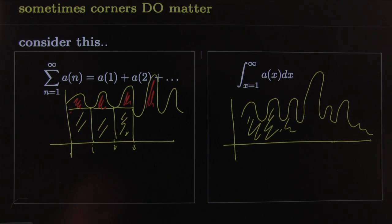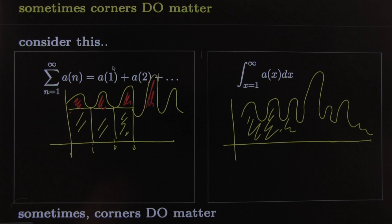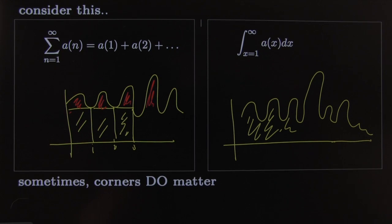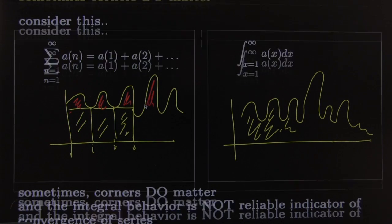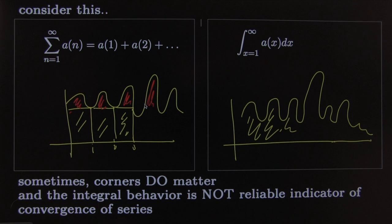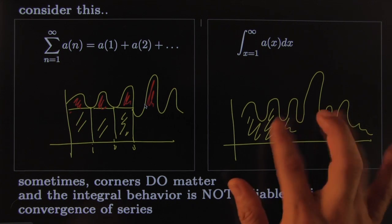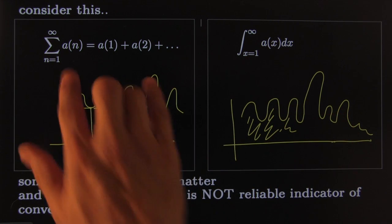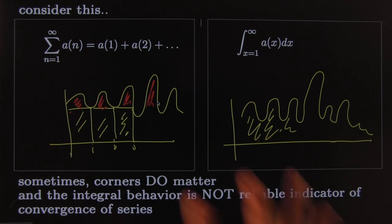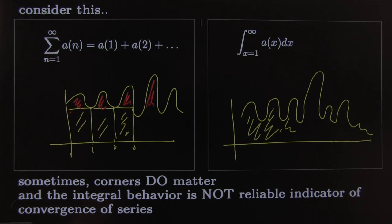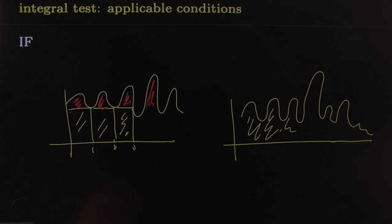So sometimes the corners could matter a lot, and this just gives you some intuition into when that might be. So if the corners do matter, just to summarize, this behavior of the integral is not a good indicator of the behavior of the series. So in that case, all bets are off. We cannot use the integral test.